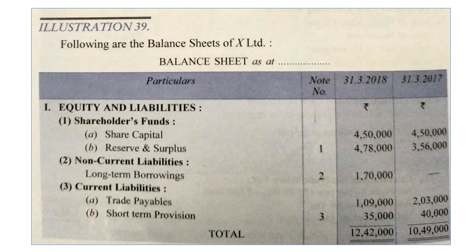Under current liabilities — trade payables: the amount is decreasing. When current liabilities decrease, it is a profit, so this will be subtracted. Short-term provisions generally contain taxation. Current year taxation will be added in NPBT, and previous year taxation will be paid. The addition of rupees 35,000 will be done in NPBT, and the income tax of 2017 — rupees 40,000 — will be paid (minus) in cash flows from operating activities.